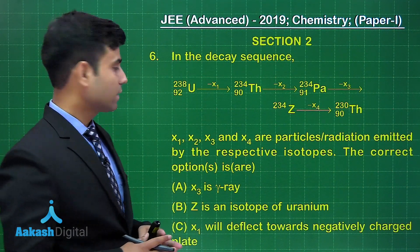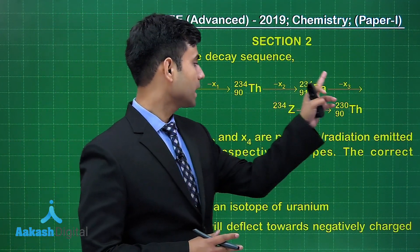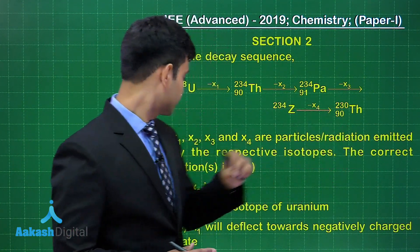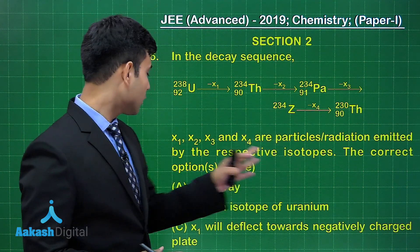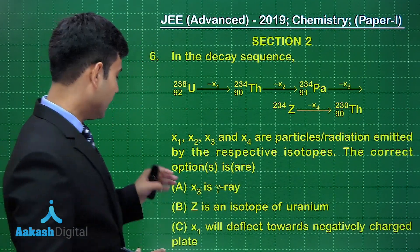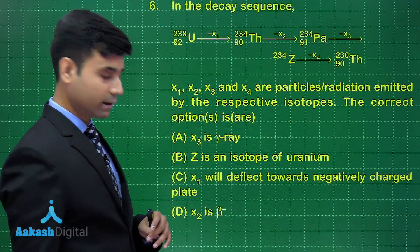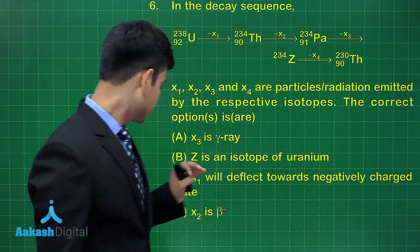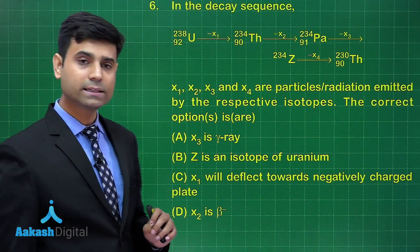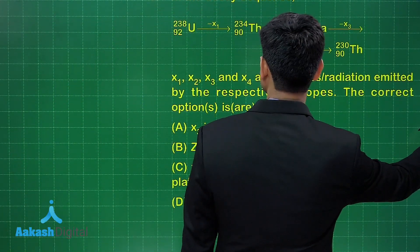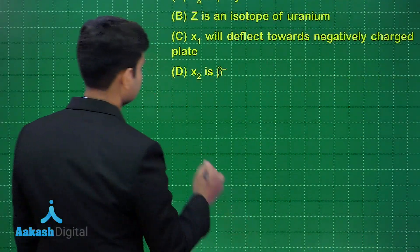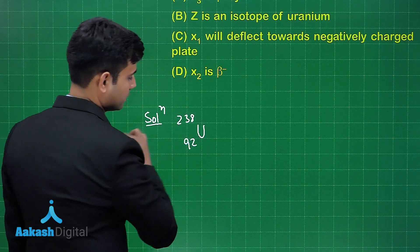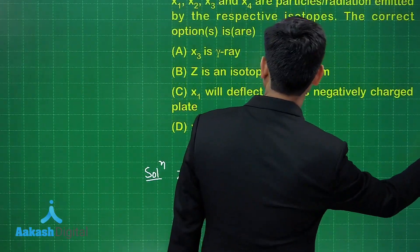The next question involves a nuclear decay sequence where x1, x2, x3, and x4 are particles or radiations emitted by respective isotopes. Option A says x3 is a gamma ray. Option B says Z is an isotope of uranium. Option C says x1 will deflect towards a negatively charged plate. Option D says x2 is a beta-minus particle.